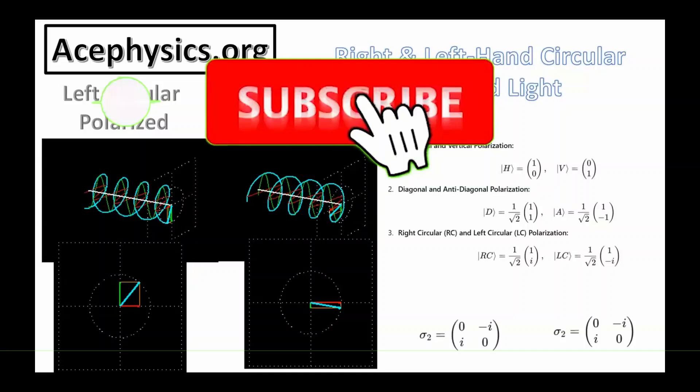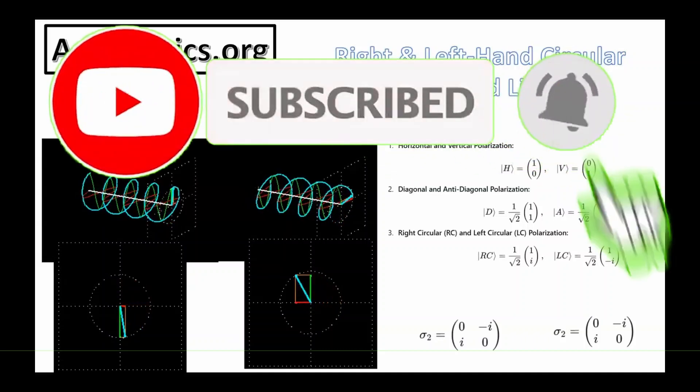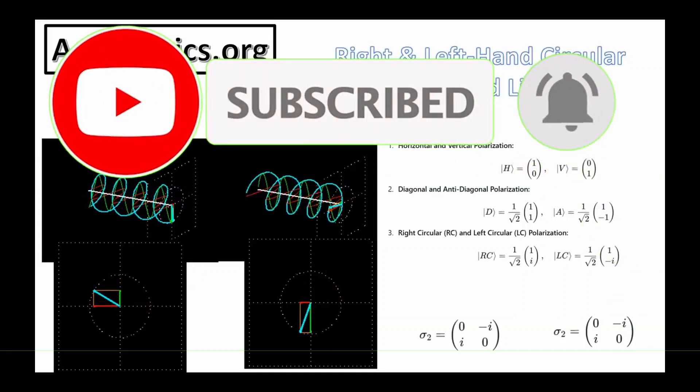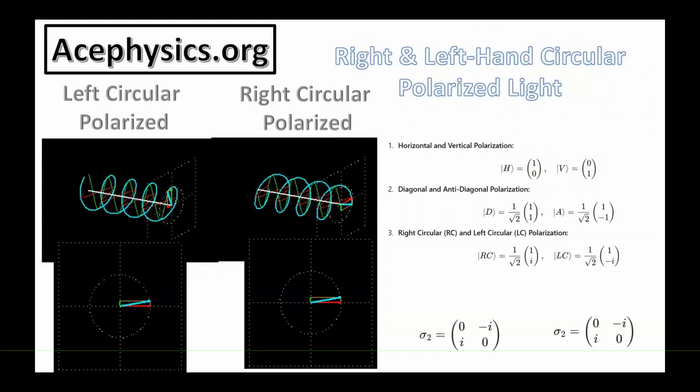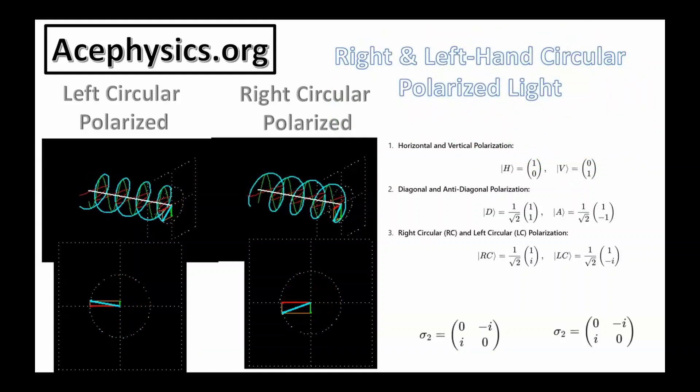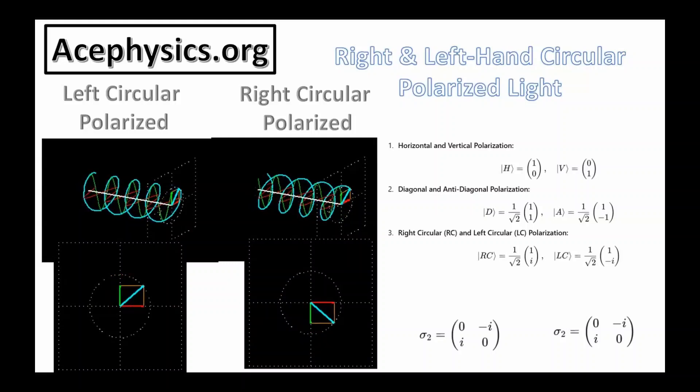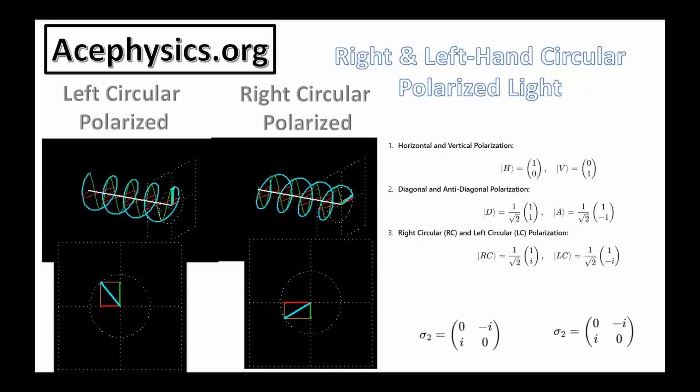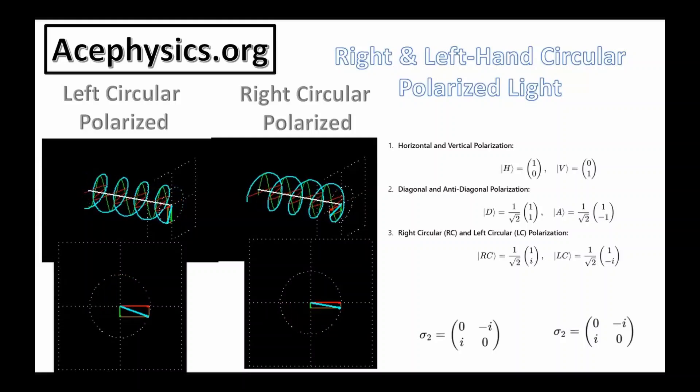Right and left circular polarization can be thought of as specific combinations of linearly polarized light. Any light wave can be expressed in terms of horizontal and vertical polarization, diagonal and anti-diagonal polarization, or right and left circular polarization. The equations on the right provide a mathematical description of these polarization states. The details are beyond the scope of this discussion.